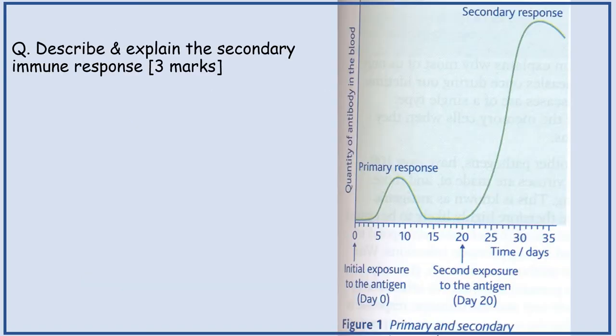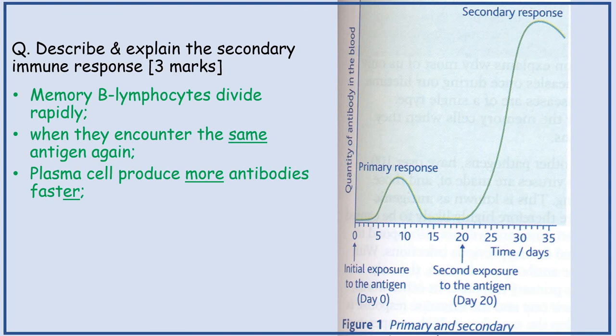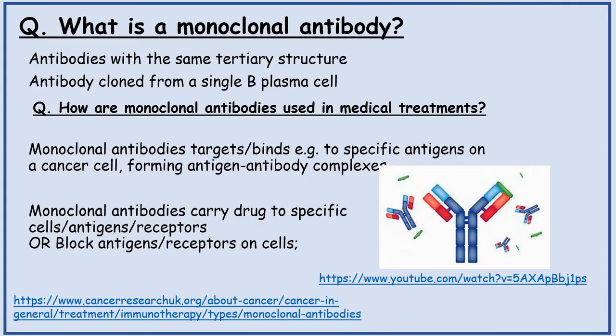Describe and explain the secondary immune response. Memory B lymphocytes divide rapidly when they encounter the same antigen again, and plasma cells produce more antibodies faster. What is a monoclonal antibody? Antibodies with the same tertiary structure, cloned from a single plasma B cell.